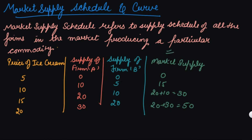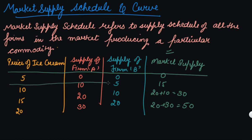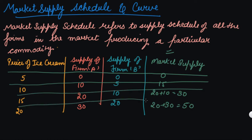You can calculate your market supply by adding the two firms: 0 plus 0 gives 0, 10 plus 5 gives 15, 20 plus 10 gives 30, and 30 plus 20 gives 50. This is your market supply schedule. Because it is in tabular form, the tabular representation is your market supply schedule, and when we plot this on a graph it will become a market supply curve.